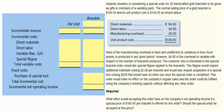Imperial Jewelers is considering a special order for 20 handcrafted gold bracelets to be given as gifts to members of a wedding party. The normal selling price of a gold bracelet is $189.95 and its unit product cost is $149 as shown below.